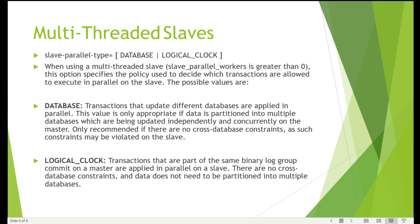In 5.7, logical clock was introduced. Transactions that are part of the same binary log group commit on the master are applied in parallel on the slave. For example, if T3, T4, and T5 are all dependent on T2, once T2 finishes, T3, T4, and T5 can be executed in parallel because they don't depend on each other. Any transactions working in this scenario with no cross-database constraints are executed in parallel on the slave side.